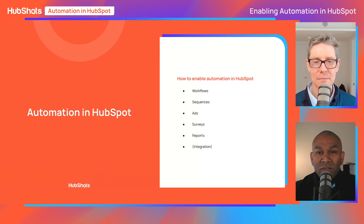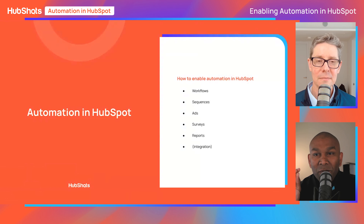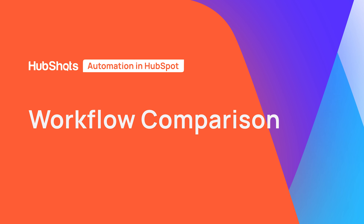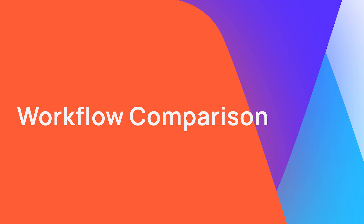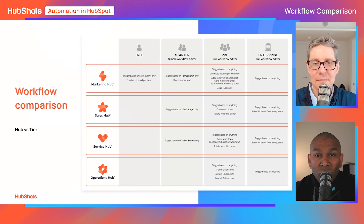Let's talk about automation in HubSpot and how to enable it. We'll cover the key areas people often focus on: first, workflows, which you'll find under the automation menu. Next, sequences, which are sales-based. Then ads, which is about acquisition. We also have surveys, reports, and integration. Now here's a really good workflow comparison based on hubs — we split this out by tier and what hubs you have, then discuss free and starter versus pro and enterprise.